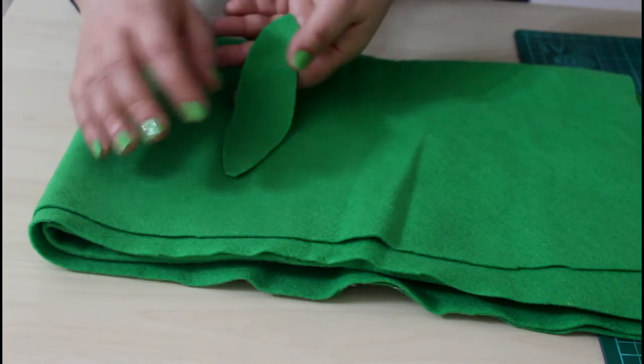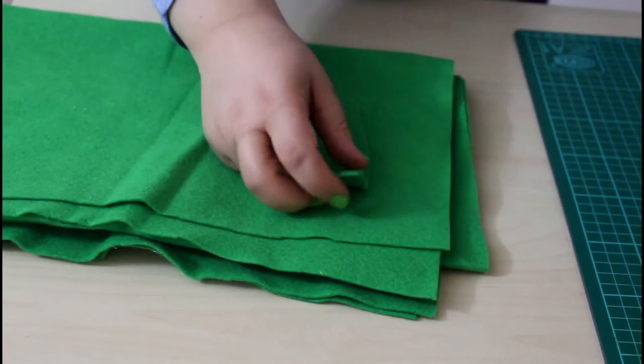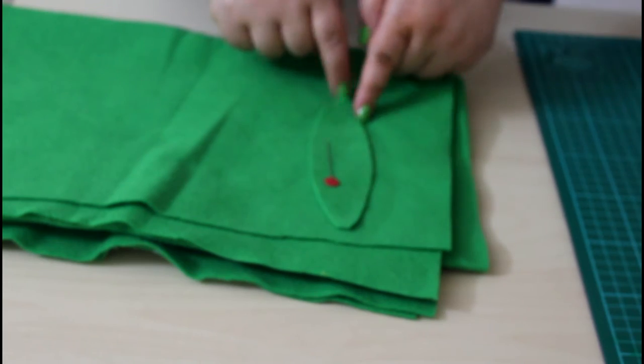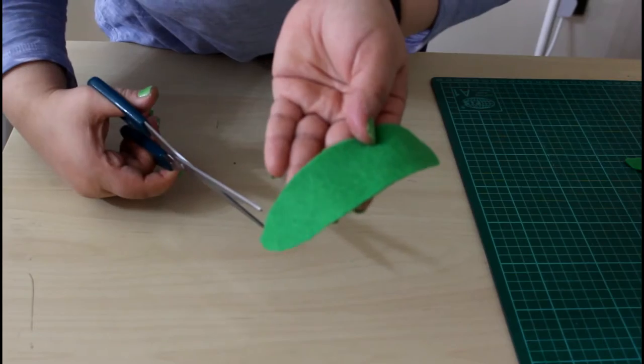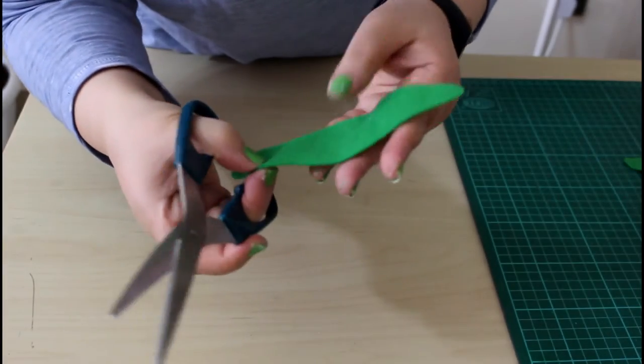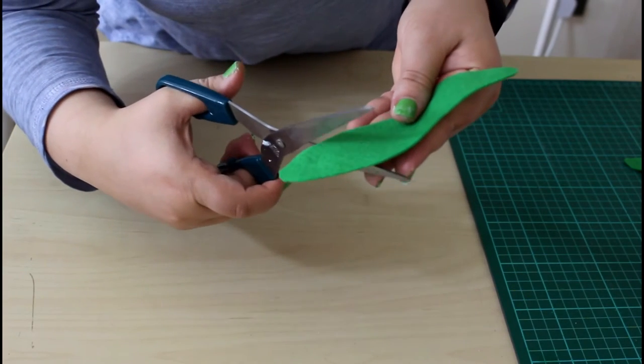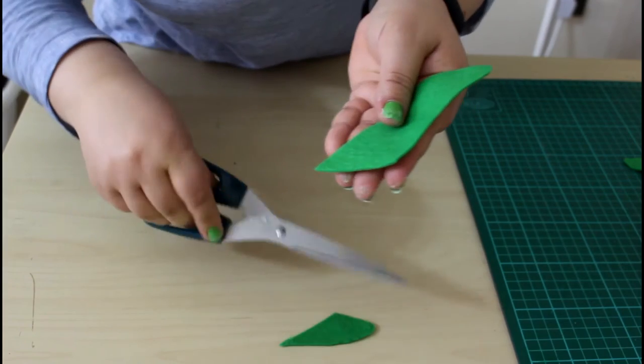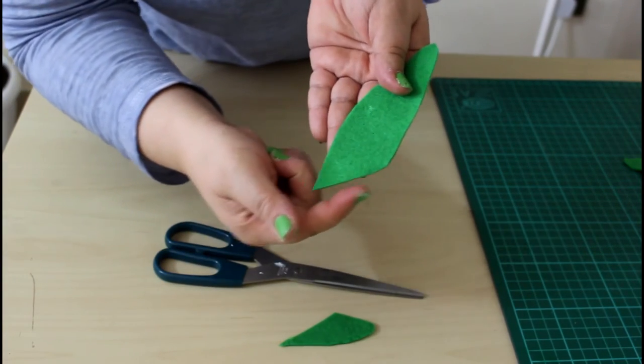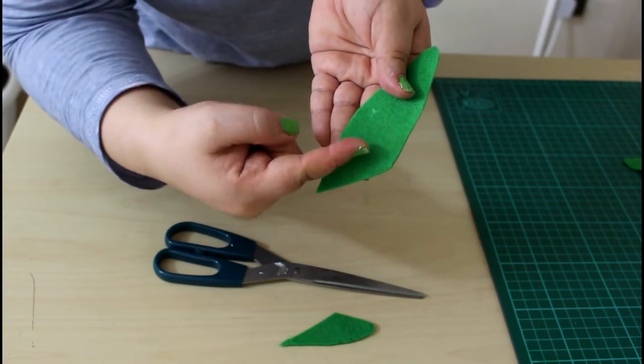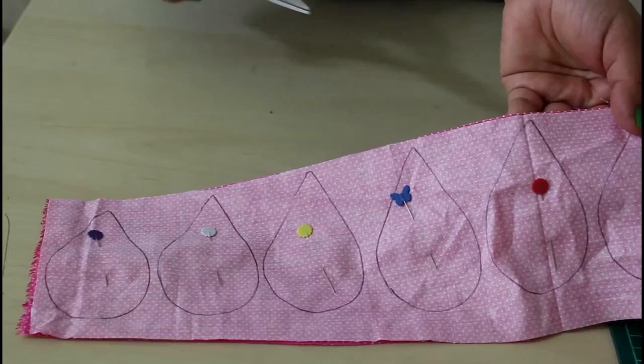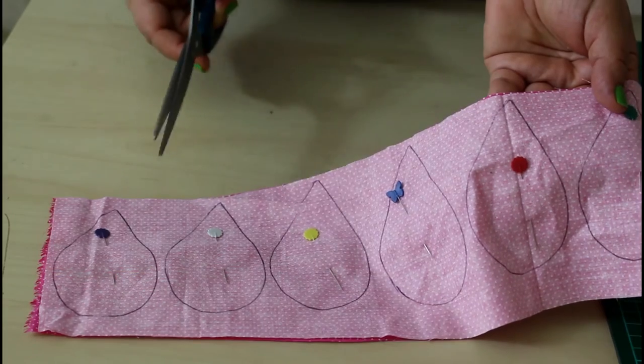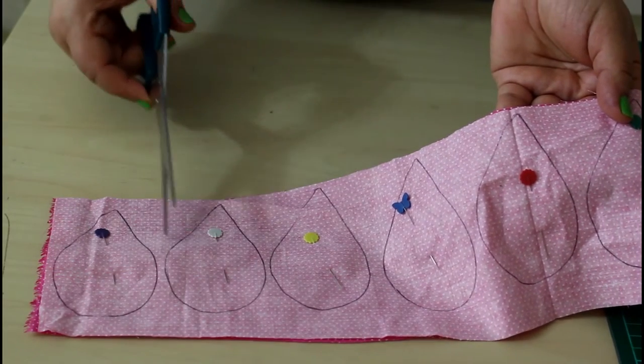Then simply cut one out, pin it, and just cut around. Do it your way, whatever your leaf template is. I like to have one of the edges looking this way, so it's easier to wrap afterwards around the stem.